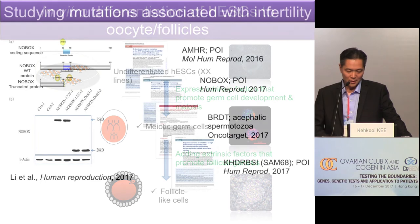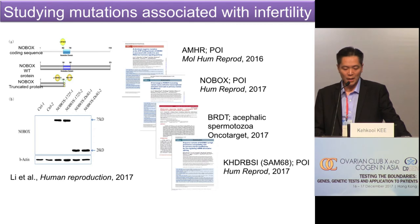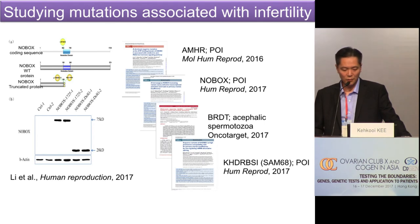So even after transplant into mouse kidney capsule, we still get mostly primary follicles starting from human embryonic stem cells, and we still have to work very hard to get a further differentiated stage. Meanwhile, we are collaborating with many physicians and clinicians to study mutations associated with infertility, including MHR, NOBOX, BRDT, and KDSR/BS1 — also known as SEM68. Some of those mutations are from sporadic infertility patients, and we are identifying the molecular mechanisms behind these mutations. Some unpublished mutations are associated with genes in early germ cell development, which we can use our differentiation system to study.